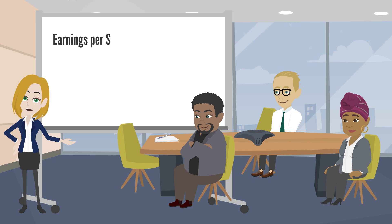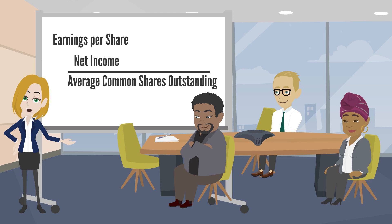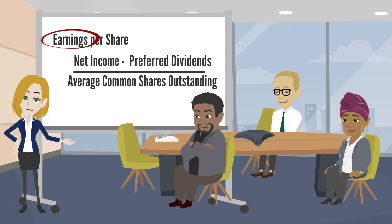Earnings per share is a measure of net income earned on each share of common stock. It is computed by dividing net income by the average number of common shares outstanding during the period. The earnings refer to the amount of net income available to each common stockholder. If there are preferred dividends, we must deduct them from net income to arrive at income available to common stockholders.